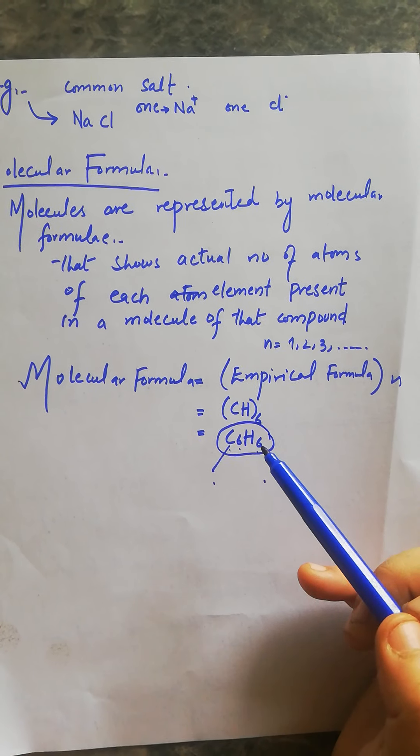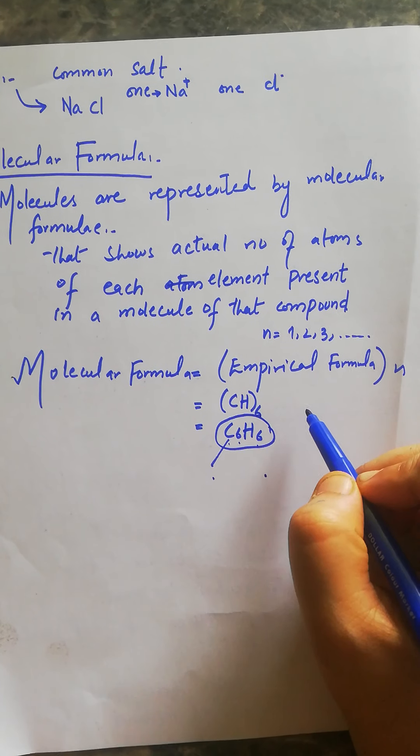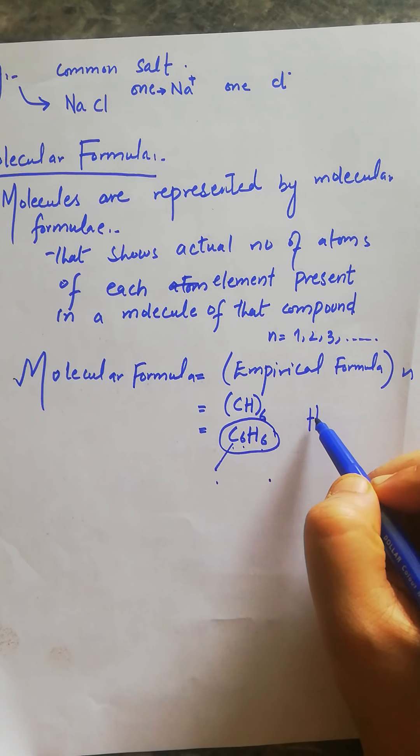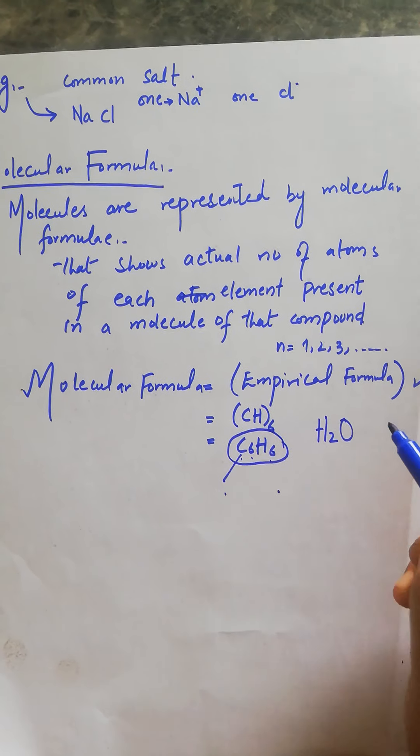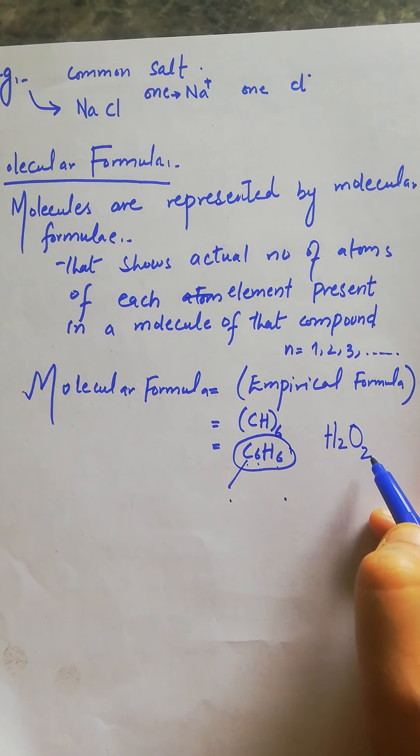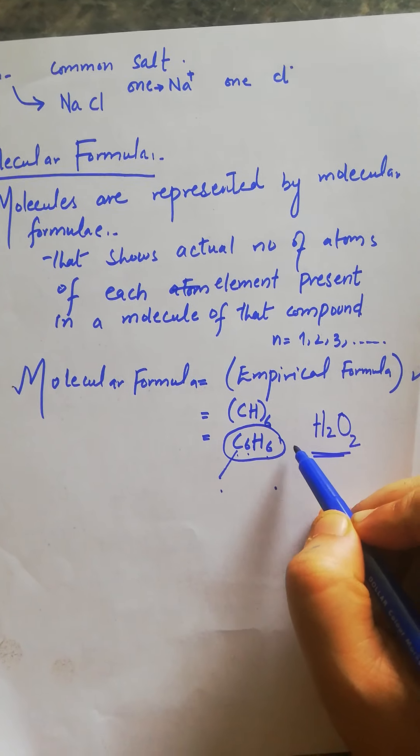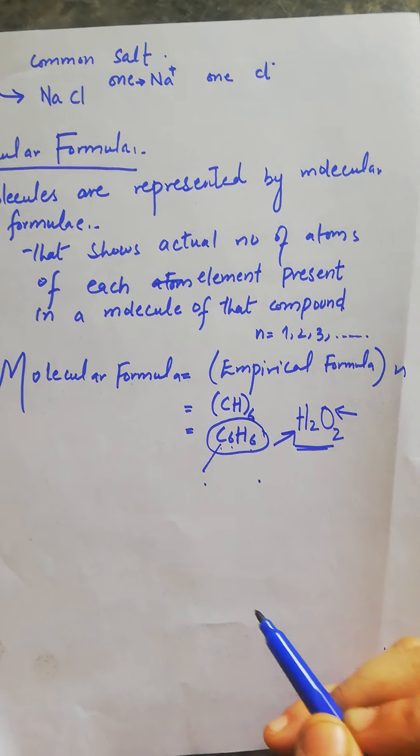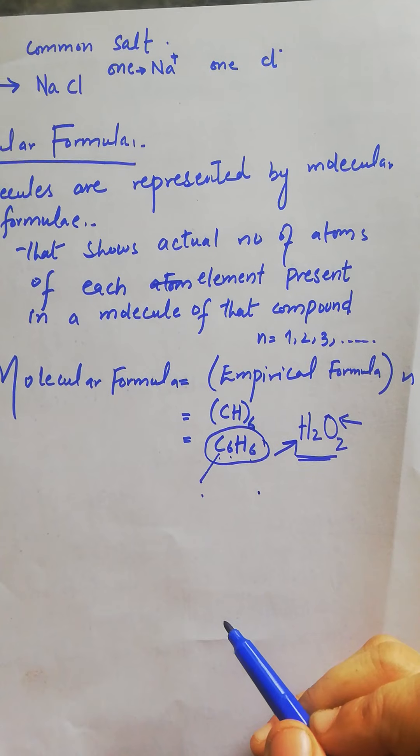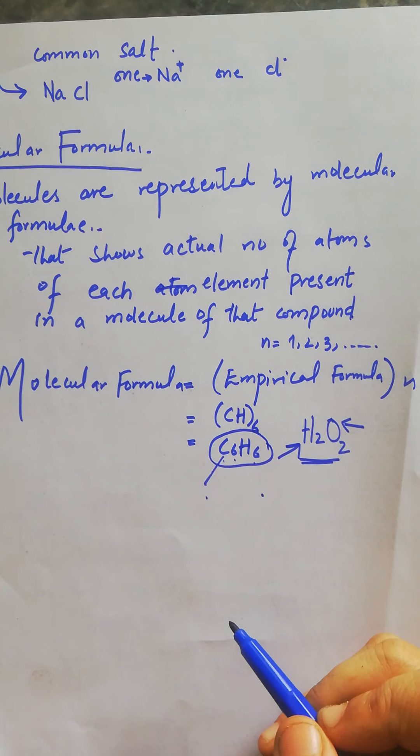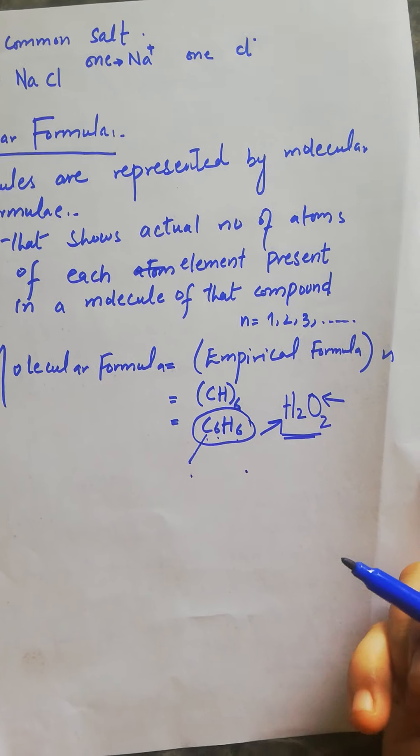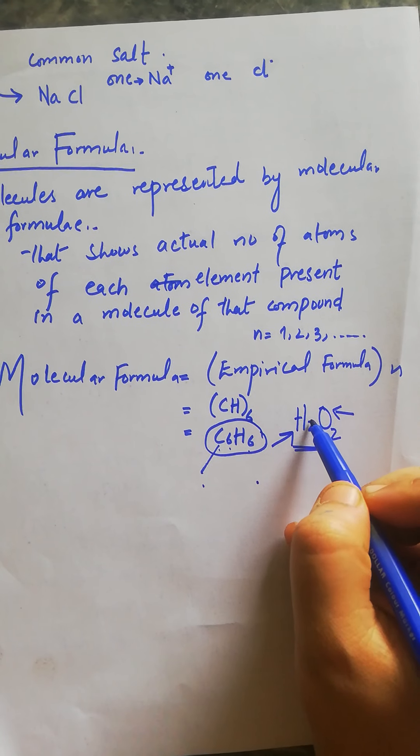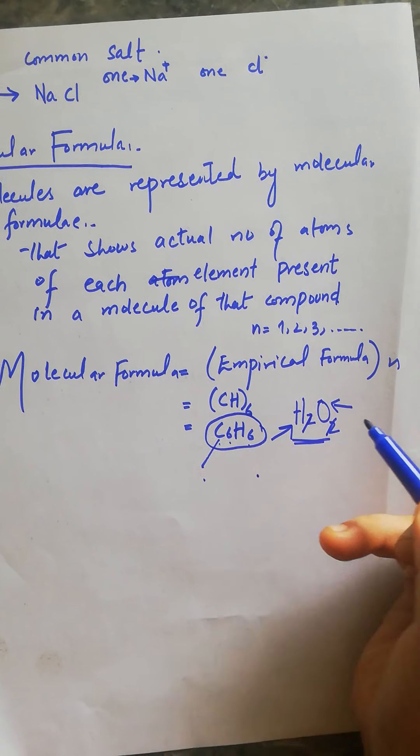Now we take another example: hydrogen peroxide, H2O2. This is the molecular formula which shows that there are two hydrogen atoms and two oxygen atoms.